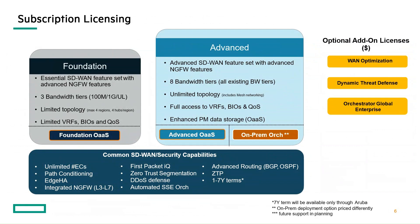The Foundation level license hosts the orchestrator as a service in the cloud, whereas if you want an on-premises orchestrator, you'd look at the Advanced tier. The Advanced tier offers all the functionality — advanced SD-WAN and advanced next-generation firewall features. There are eight bandwidth tiers for more flexibility, unlimited topology so you can include mesh networking with no restrictions on network design, and full access to VRFs, business intent overlays, and no restrictions on quality of service. With Advanced you can still host as a service through HPE or put the orchestrator on-premises.